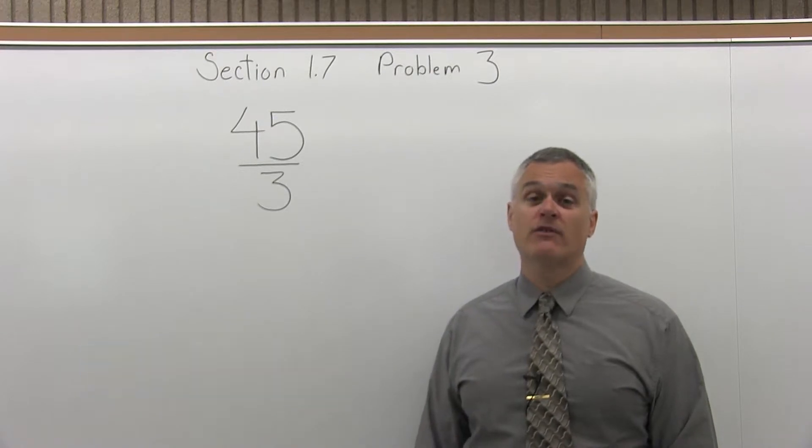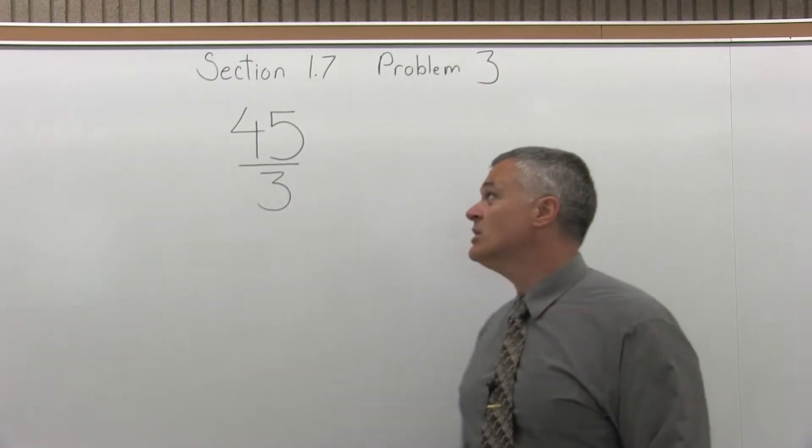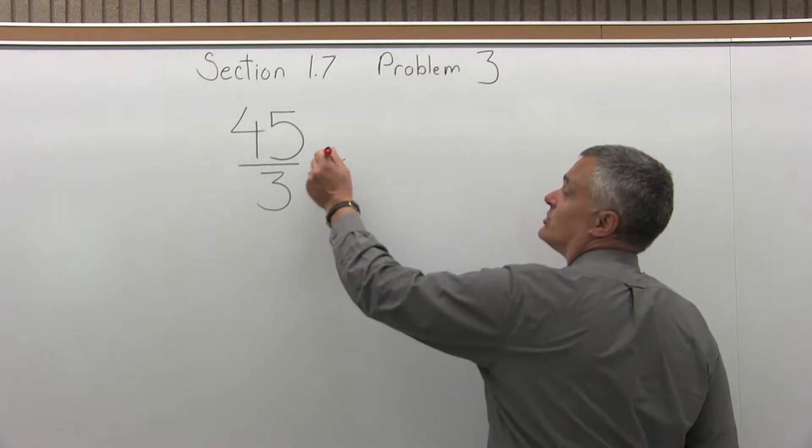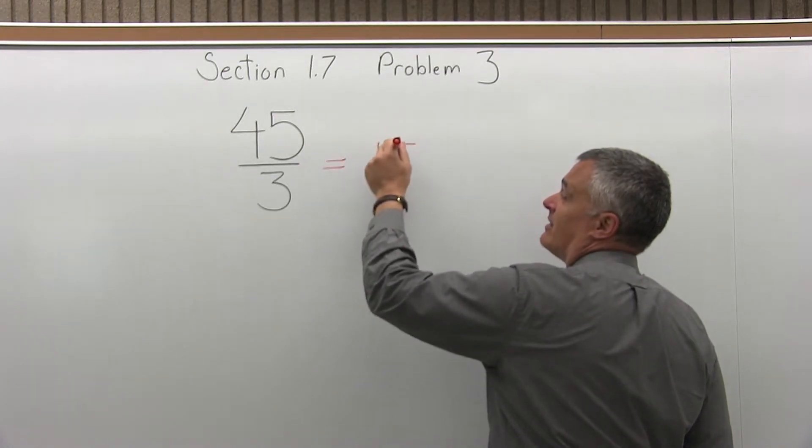What we have is 45 over 3, which is really 45 divided by 3. So I can see that you could just divide 3 into 45, 15 times.